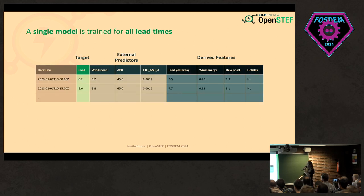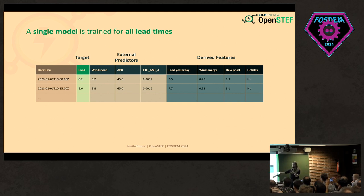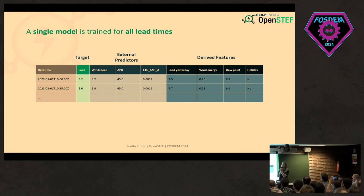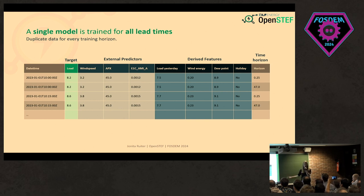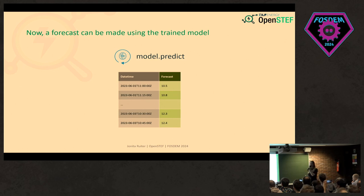We can train a single model for all our lead times. The data has a datetime with increments of 15 minutes, our targets, and external predictors — including Dutch energy prices. If you have multiple training horizons, we simply duplicate our data and use it for those horizons. With our trained model we can now actually make the forecast.